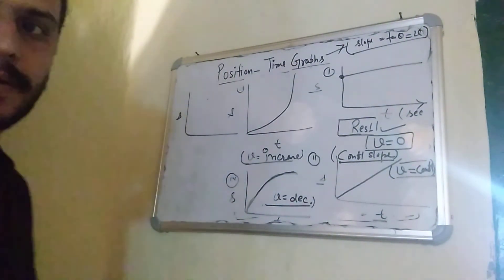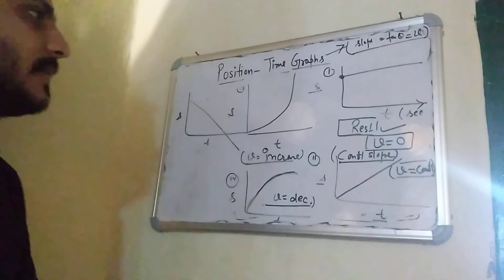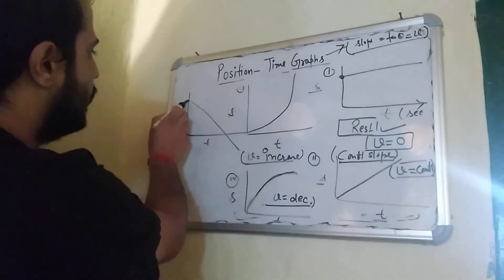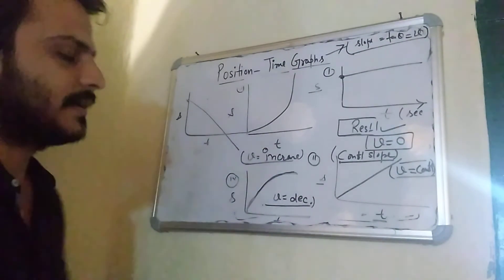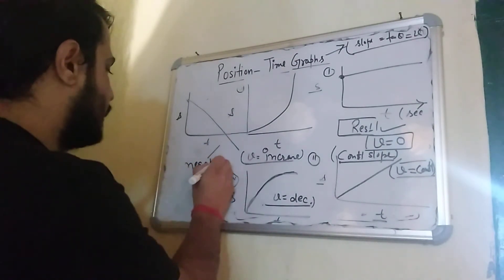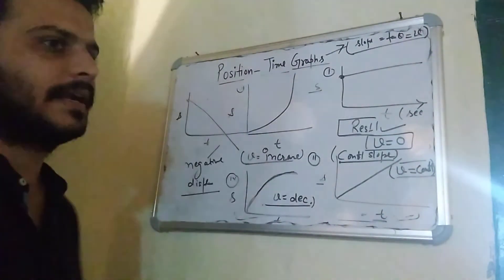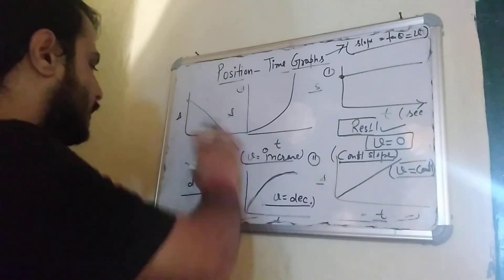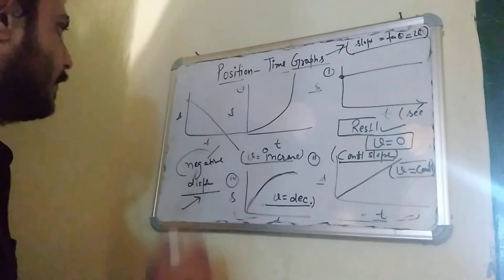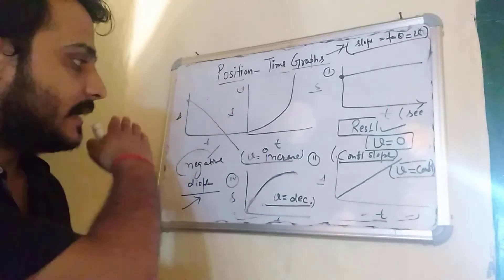Now here is another graph with S and T axes showing a straight line with a negative slope. This graph has a constant slope, but the slope is negative. This tells us about negative displacement — the body is returning toward its original position. Velocity is constant because the slope is constant, but displacement is negative.